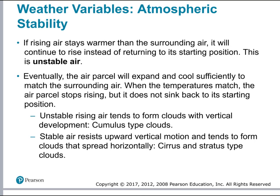Normally, as air warms it rises, then expands and cools off, and sinks back down — this is called stable air. But if rising air stays warmer than the surrounding air, it will continue to rise instead of returning to its starting position — this is unstable air. Eventually the air parcel expands and cools to match surrounding air and stops rising, but it doesn't sink back down to its starting position. Unstable rising air tends to form clouds with vertical development — cumulus-type clouds. Stable air resists upward motion and forms clouds that spread horizontally — cirrus and stratus-type clouds.